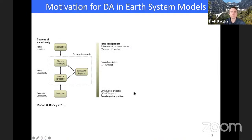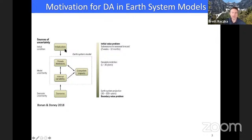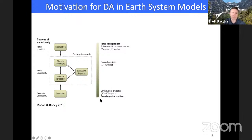Getting into some motivation for using data assimilation in our system models: no matter what part of the earth system we're modeling, the mechanistic descriptions are getting better and better with time, but one thing we can never quite remove is sources of uncertainty. These include uncertainty from initial conditions — the starting point of our system state — inherent model uncertainty from assumptions about equations and parameterizations, and scenario or boundary value uncertainty, where boundary conditions impact the domain we're interested in.